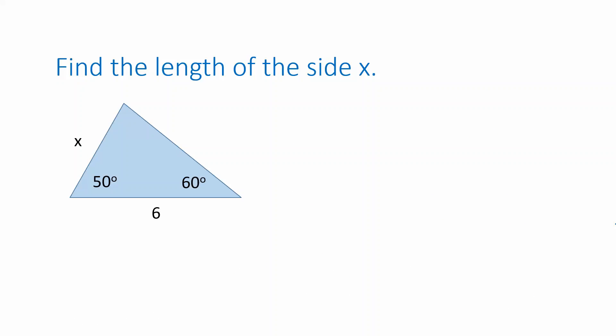Here's another one with a slightly different setup: one known side length, two known angles, and one of those known angles is opposite the unknown side length. Because we have known angles with one opposite the unknown side, we can use the law of sines. Remember, I actually have three known angles — as soon as I know two angles I know all three, because angles in a triangle add up to 180 degrees. Since the two given angles add up to 110 degrees, the third angle is 70 degrees.